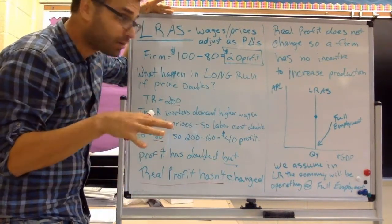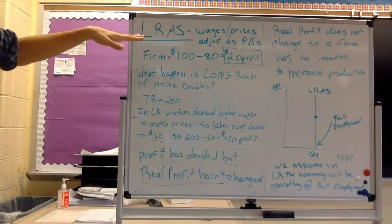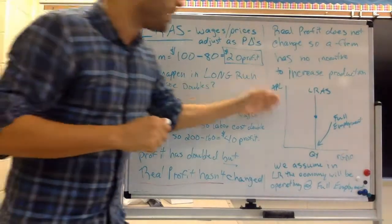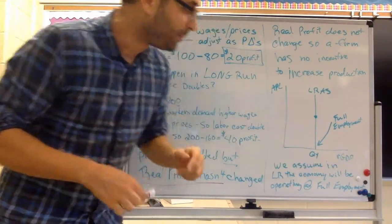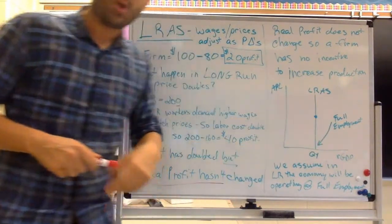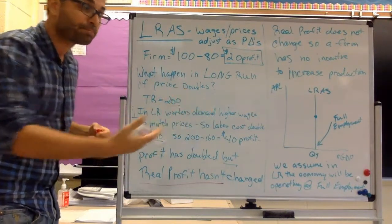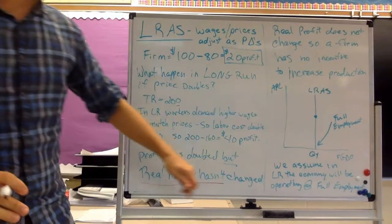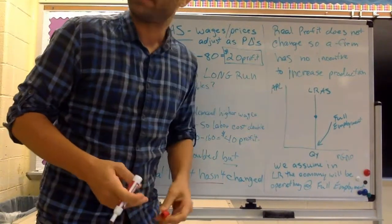So in the long run, just like we said before, wages and prices adjust as price level changes. So the quantity is always going to wind up in the long run at this point. What is that point? That's the point of full employment or the natural rate of unemployment or somewhere on the potential GDP. So we assume in the long run, the economy will be operating at full employment.